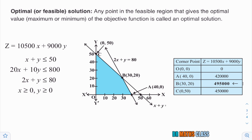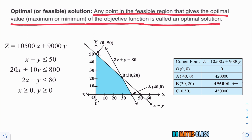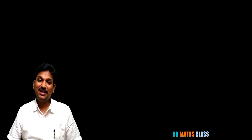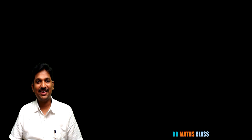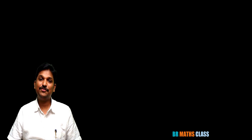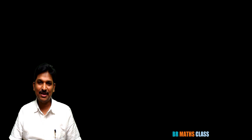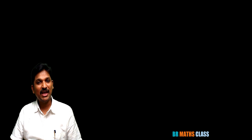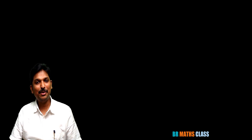What is optimal solution? Any point in the feasible region that gives the optimum value — maximum or minimum value of the objective function — is called optimal solution. I hope you understand this. If you like this video, please drop a like and share it with your friends. If you are not yet subscribed to my channel, subscribe now. Thanks for watching. Take care. Bye-bye.